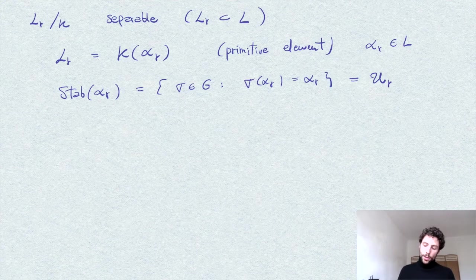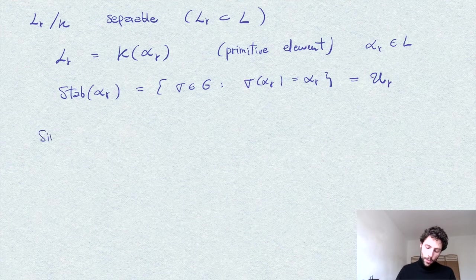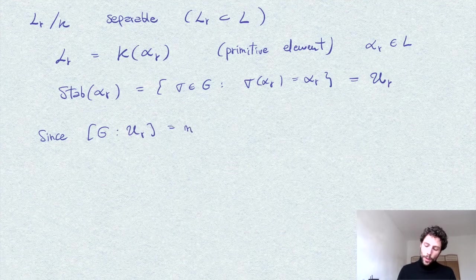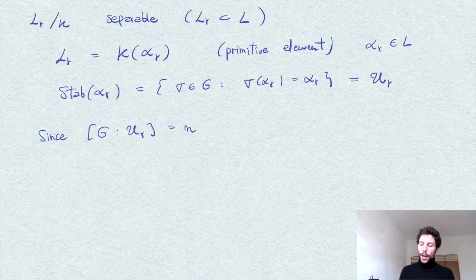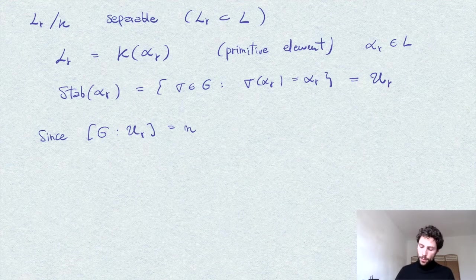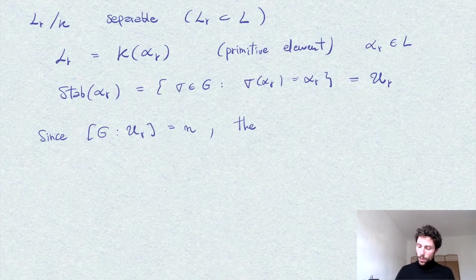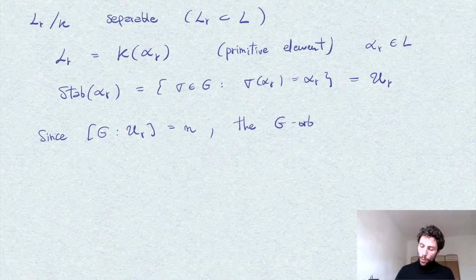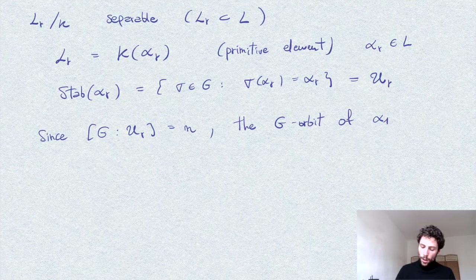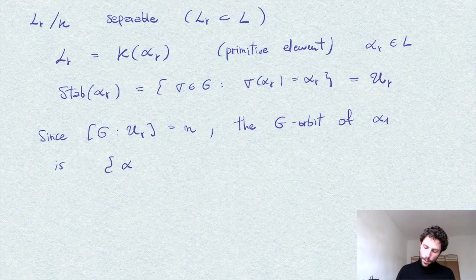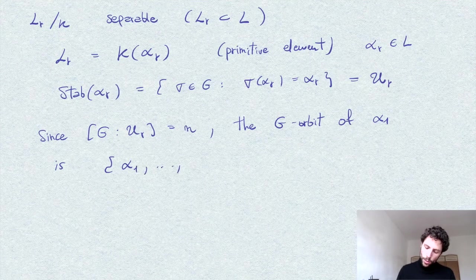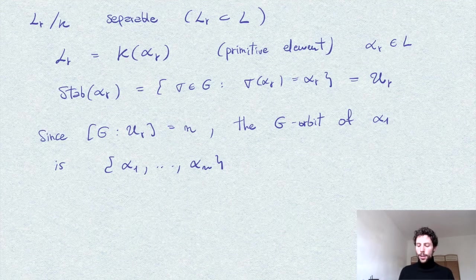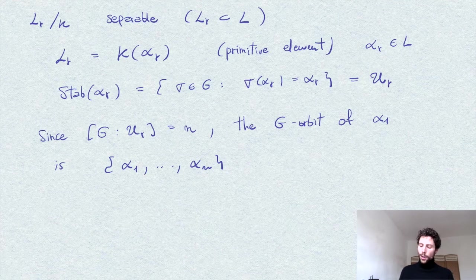And so since the index of UR, as we said, is n in G, therefore the alpha_R are an orbit of G. So we say the G-orbit of alpha_1 is precisely our set of roots alpha_1 through alpha_n. So in other words, in terms of Galois theory, all these alphas are all the conjugates of alpha_1.